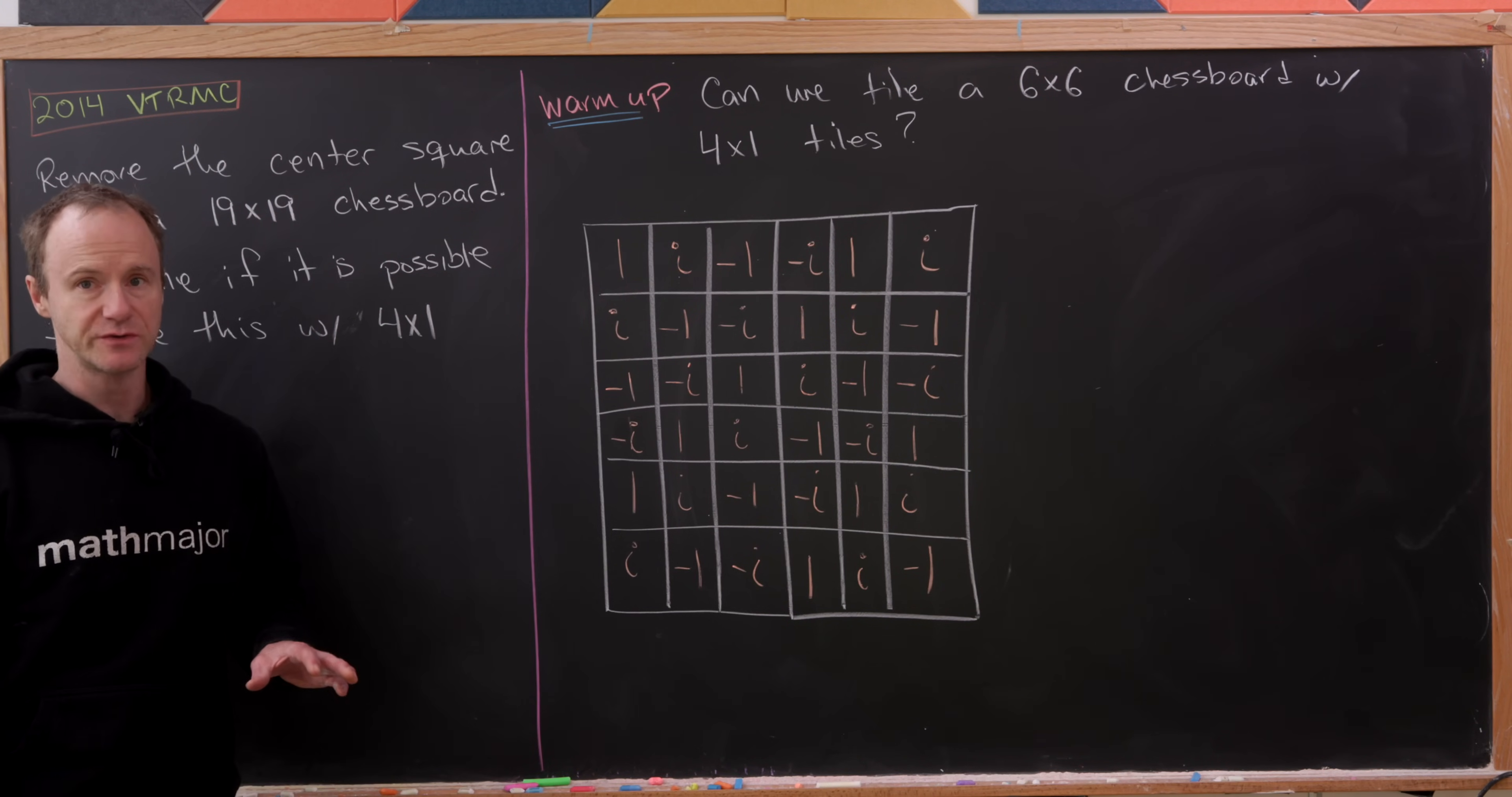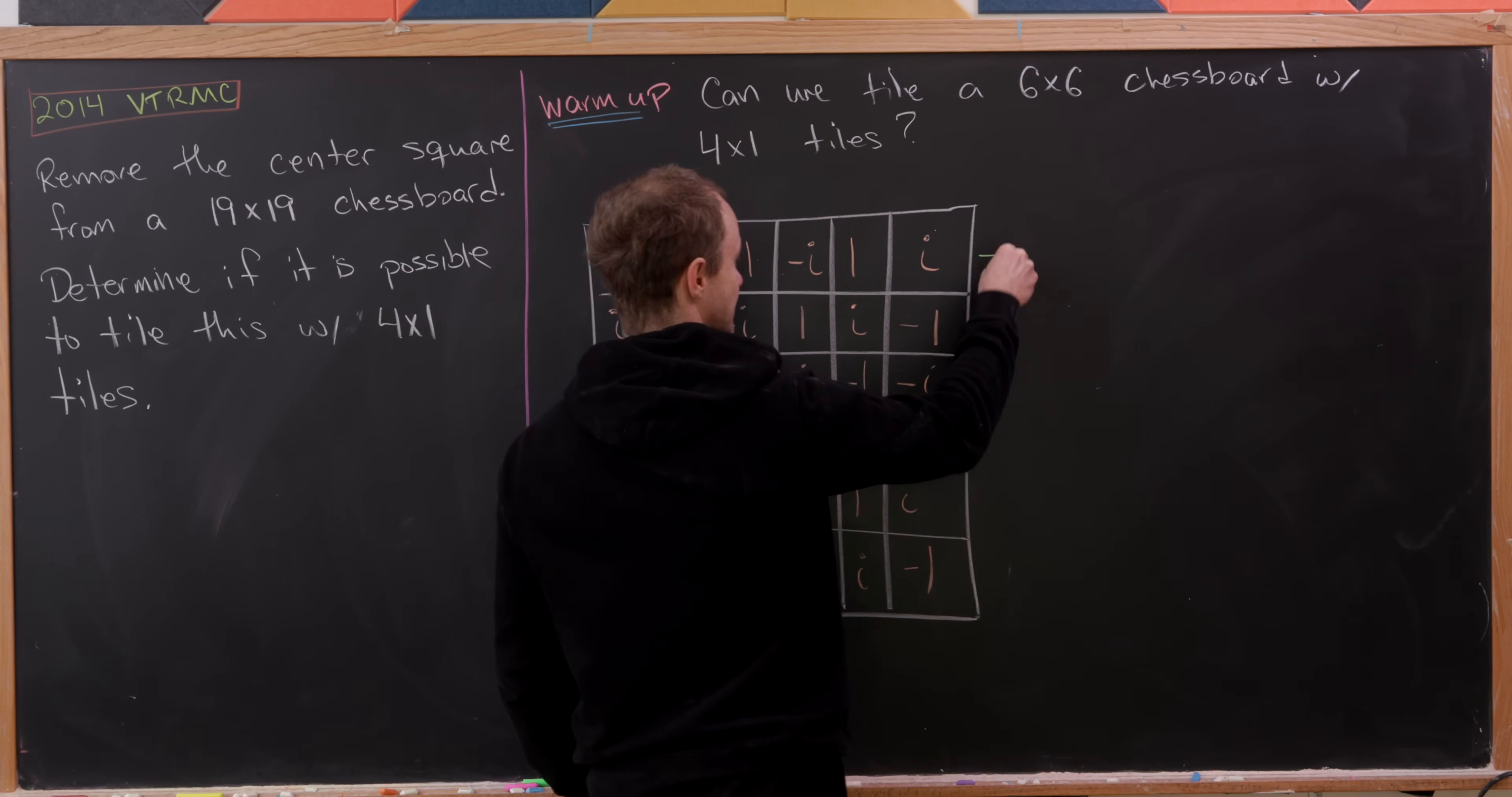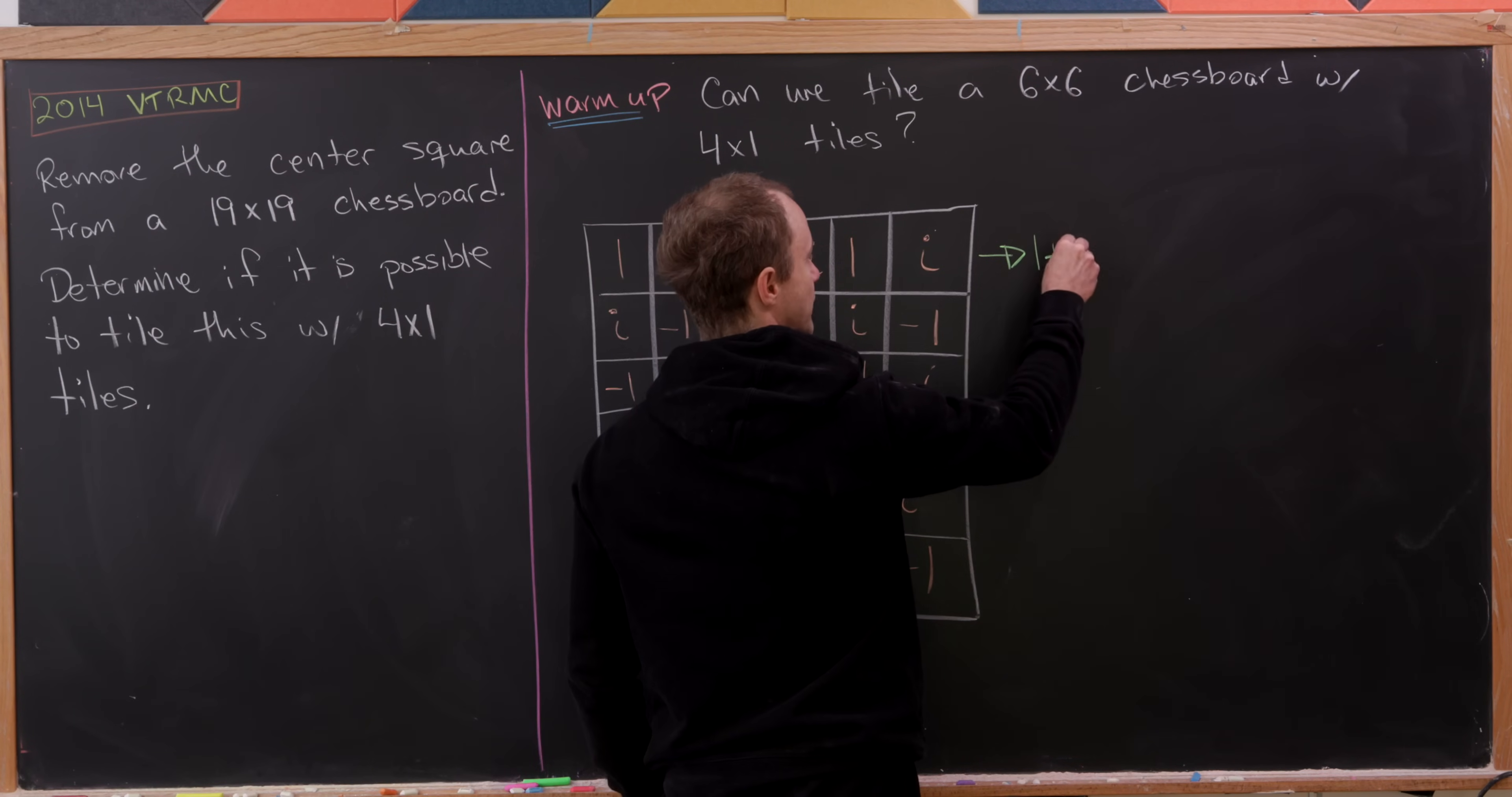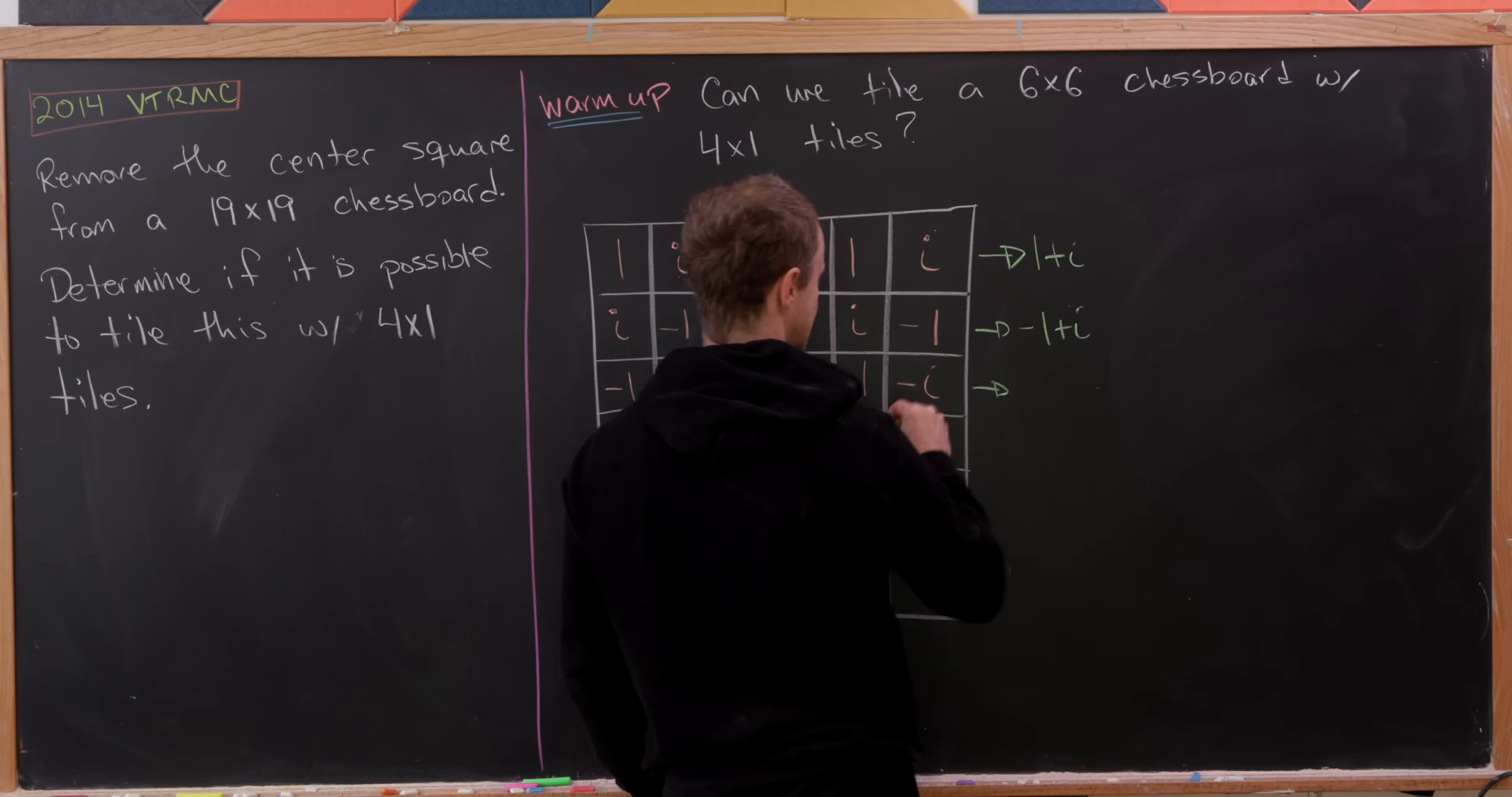And now what I'd like to do is look at the total sum of all of these numbers that are in this board. So let's do it row-wise. Let's observe that if we sum this first row, we get some cancellation. The 1, the minus 1, the i, the minus i, and then we get left over 1 plus i. And then we can similarly sum all of these other rows.